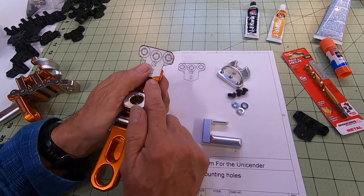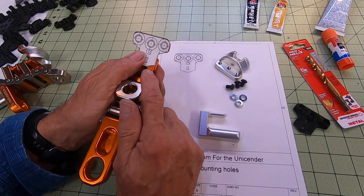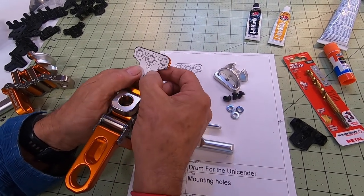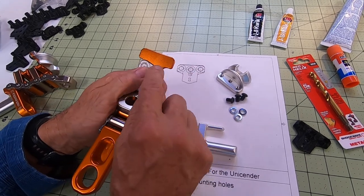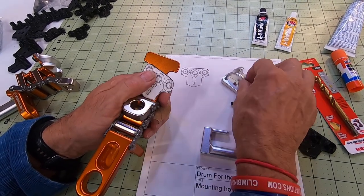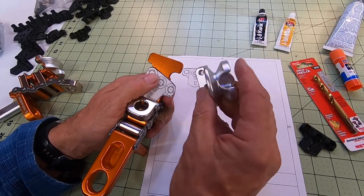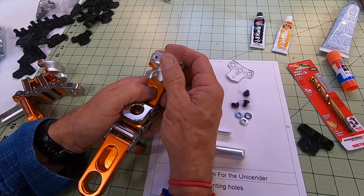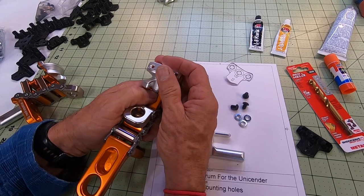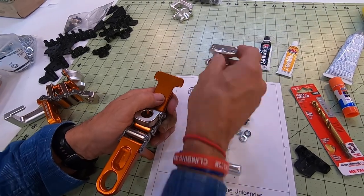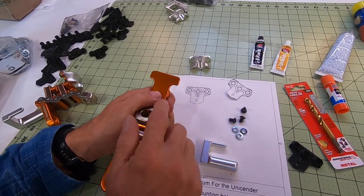And incidentally, if you are getting later on in the life of the unicender or if you're starting to get wear, rather than going to a bigger rope you can actually elongate those holes, make it a little bit of a slot. And when you put this on you can make it where it comes and pushes more into the rope and it'll give you a little longer wear out of the unicender.